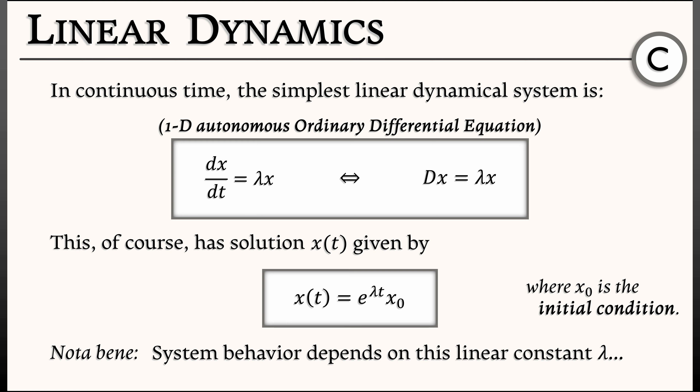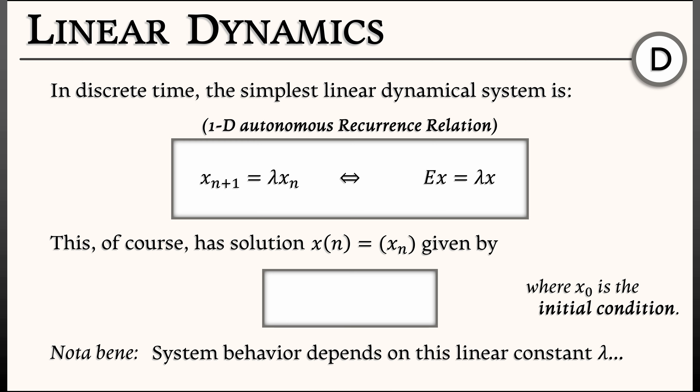What happens in discrete time? Things are similar but a little different. The simplest linear dynamical system in discrete time is given by the recurrence relation x(n+1) equals lambda times x(n). Writing this in operator notation using the shift operator e, we say e x equals lambda x, where x is the sequence x(n). The solution is still something like an exponential function, but now the base is lambda: x(n) equals lambda to the n times the initial condition x-naught. One sees the same sort of dependence on lambda over discrete time n.